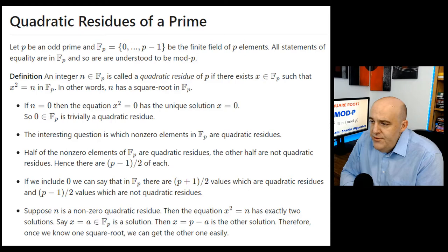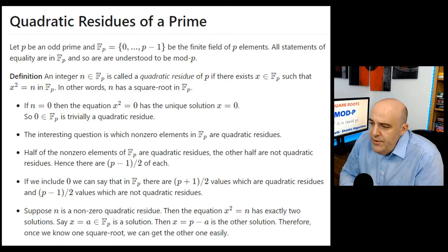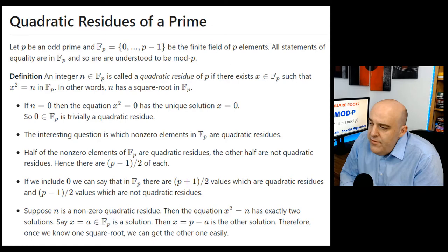Let's begin by reviewing what a quadratic residue of a prime is. In this talk, p is going to be an odd prime — we won't bother talking about p equals 2. For an odd prime p, we'll let fp be the finite field of p elements, realized as the integers from 0 to p minus 1. Whenever we write an equation, we're always working in fp, so we regard all equalities as being mod p.